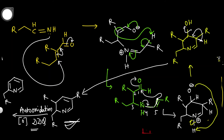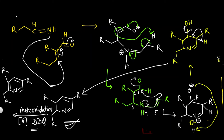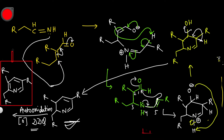After aromatization by DDQ oxidation, the final product is formed — a substituted pyridine ring with R groups at the 2, 4, and 6 positions. This is our final product of the Chichibabin pyridine synthesis.